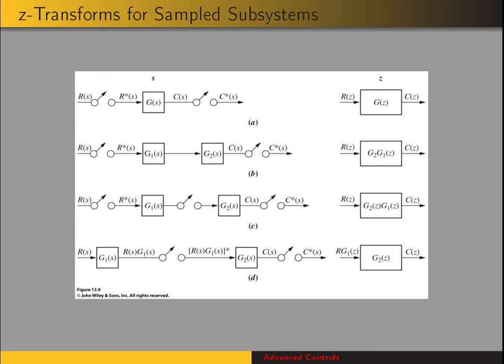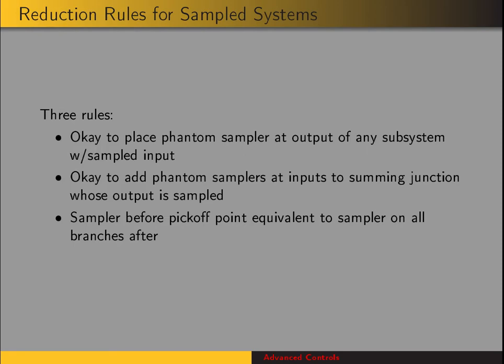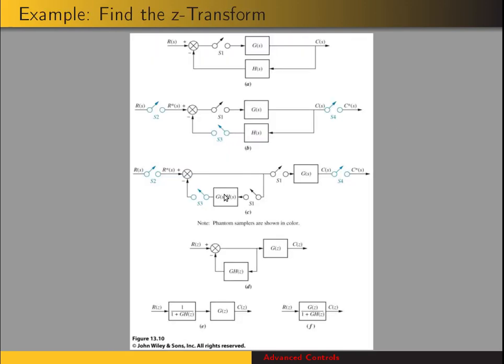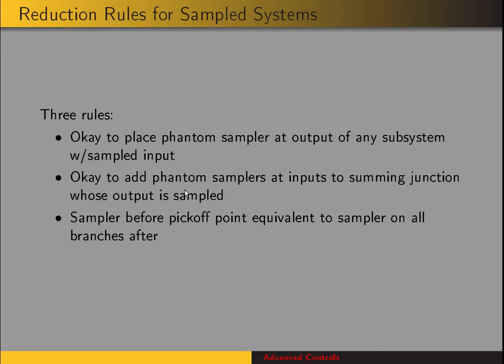That's how to find the Z-transforms for sampled subsystems. Now we want to use the following three rules for moving blocks and samplers in a block diagram. Rule one: it's okay to place a phantom sampler at the output of any subsystem with sampled input, since we're only concerned with the output at those sampling times. Rule two: it's okay to add phantom samplers at inputs to summing junctions whose output is sampled. Rule three: we can move a sampler after a pick-off point by adding it to all branches after the pick-off point.